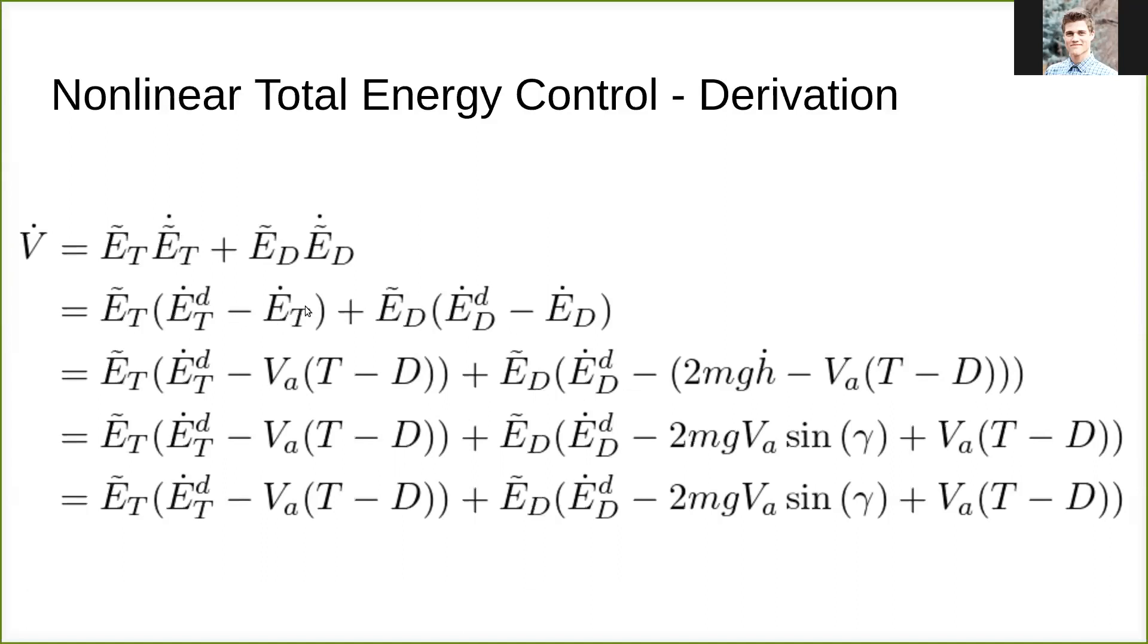We can then use our definitions for E tilde to get these substitutions for V dot. Taking a step further, we have our definitions for E_T dot and E_D dot, which we can now substitute in. We can also substitute in our H dot definition in terms of our flight path angle as stated previously. Then we have our final result.